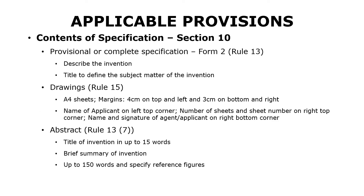Let us now see what should be the content of the specification that you need to file along with Form 1. This is provided under Section 10. It says that you can file either a provisional or a complete specification, and it has to be furnished in Form 2 under Rule 13. The provisional or complete specification should describe the invention and include a title to define the subject matter. If you are using drawings, Rule 15 provides the procedure: drawings should be on A4 sheets with specific margins; the name of the applicant should be mentioned on the left top corner; the number of sheets and sheet number on the right top corner; and the name and signature of the agent or applicant on the right bottom corner of the drawing sheet.